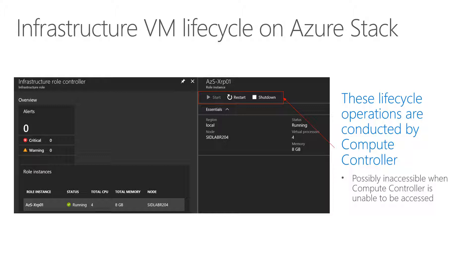In the Azure Stack development kit, every service uses only a single machine. In a multi-node system, most services have at least three instances to make sure an outage never affects the whole system — everything is implemented in a redundant way. When you select one of these instances, you can also start or restart these infrastructure roles, but this is in most cases something you will do together with Microsoft support as part of a support case.